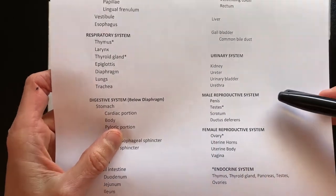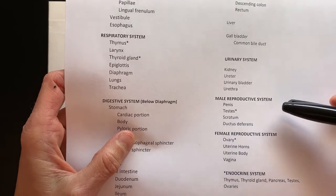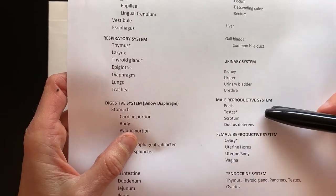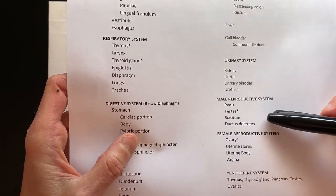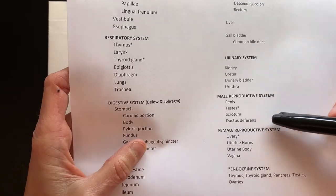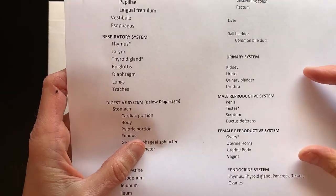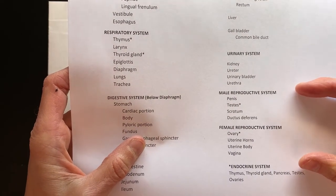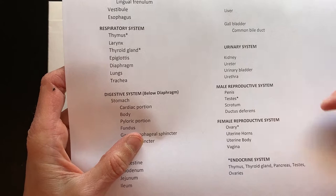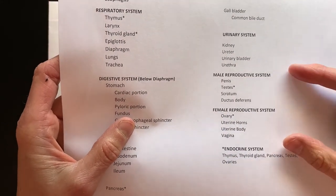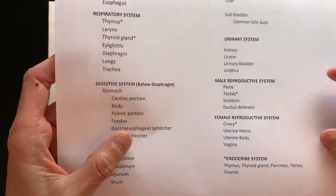Then we'll do the male reproductive system. That includes the penis, the testes, the scrotum, and the ductus deferens. Notice on both of these lists that the testes and the ovaries are also included in the endocrine system, as they are the gonads that produce hormones.